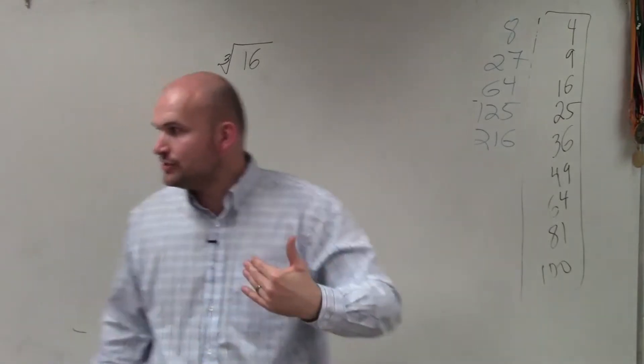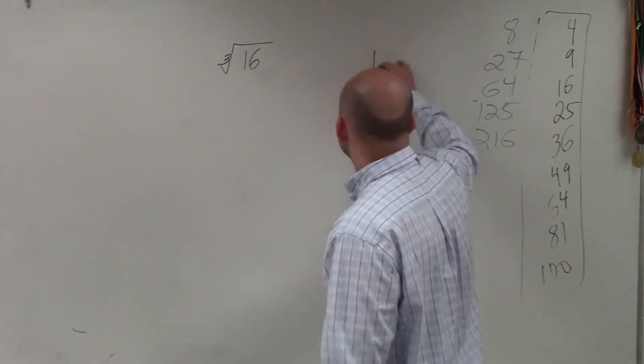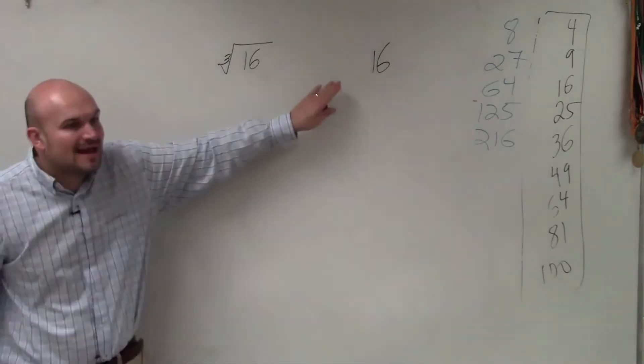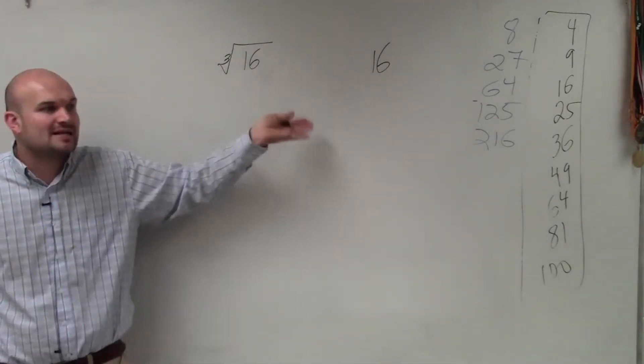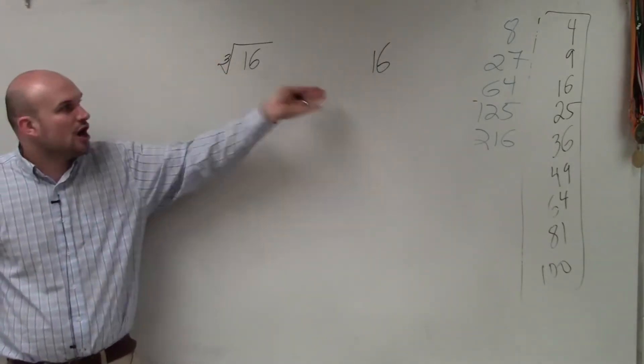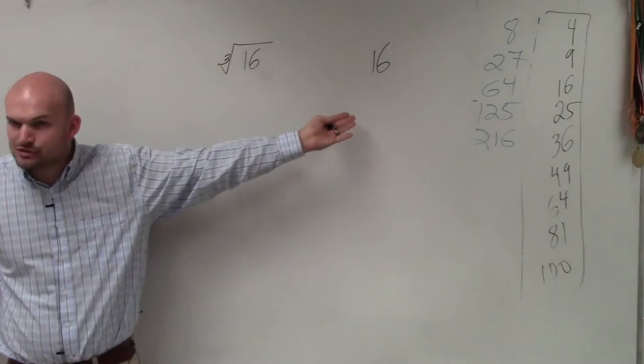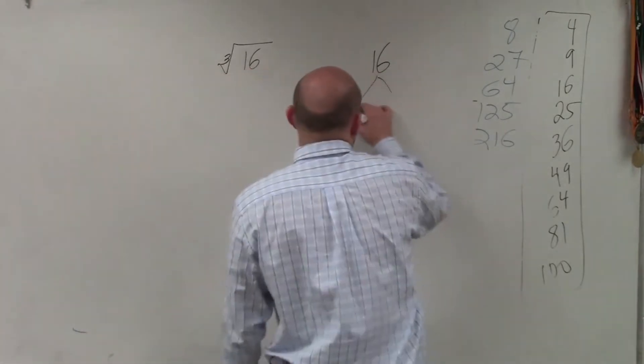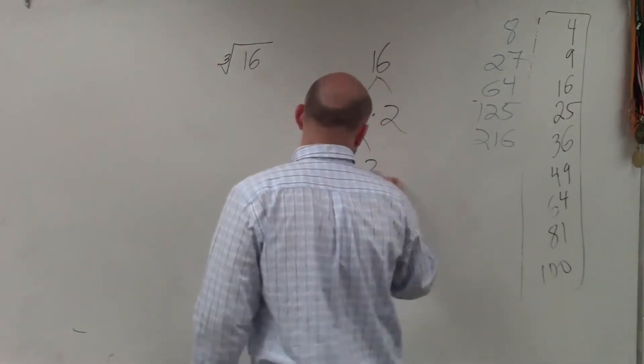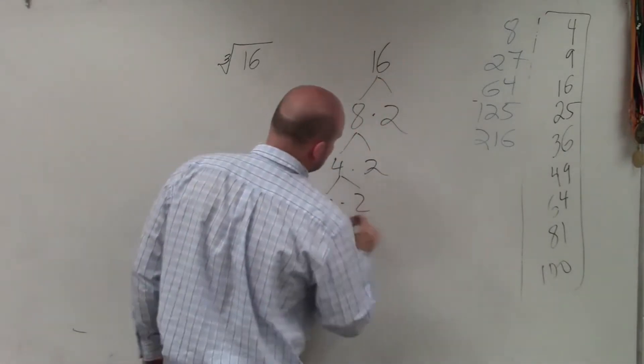So my recommendation to you is, when you're doing this, again, you can use the factor tree. Because it doesn't matter. If you have your radicand, use a factor tree to write it as prime factors. Because it doesn't matter if it's the cube root, the fifth root, the sixth root, you're always going to want to come from the same factor tree. So I break this down into 8 times 2, I break that down into 4 times 2, and that broken down into 2 times 2.